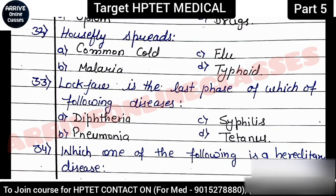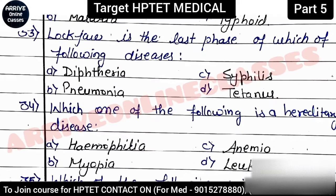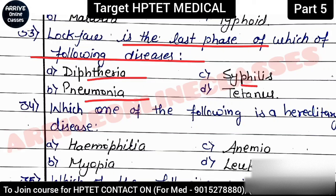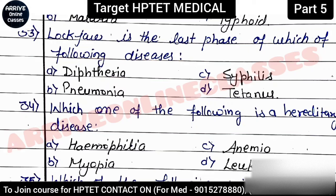Next: 'House fly spreads which disease?' The correct answer is typhoid. Next: 'Lock jaw is the last stage of which disease — diphtheria, pneumonia, syphilis, or tetanus?' Lock jaw is associated with tetanus — option D is correct, as already discussed earlier.